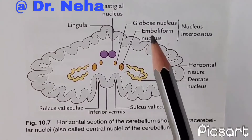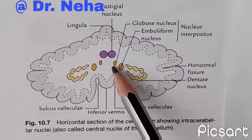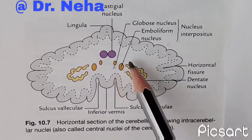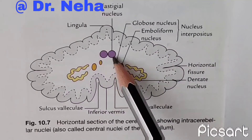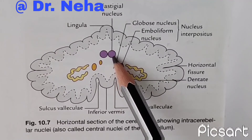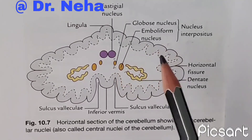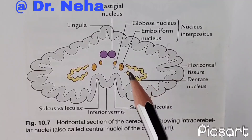Medial to the emboliform is the globose nucleus, which is rounded in shape and lies between the emboliform and fastigial nuclei. It has similar connections to the emboliform nucleus. The globose and emboliform nuclei together are sometimes referred to as the nucleus interpositus. Most medially we have the fastigial nucleus, lying very close to the midline. It is smaller than the dentate but larger than the nucleus interpositus. It is the nucleus of the archicerebellum, receiving afferent fibers from the flocculonodular lobe and conveying efferent fibers to the vestibular and reticular nuclei. The fastigial connections influence extensor muscle tone.